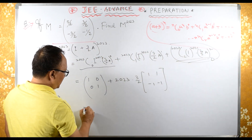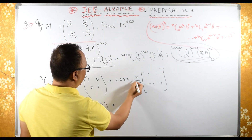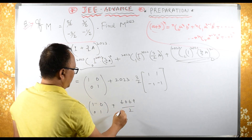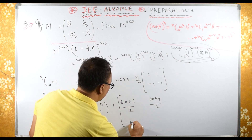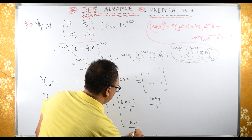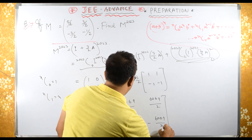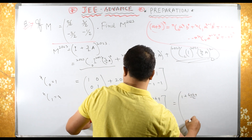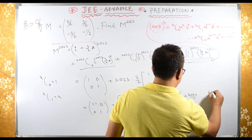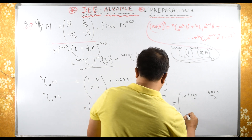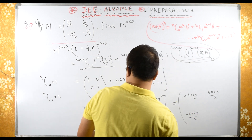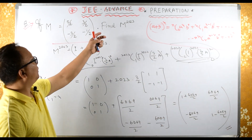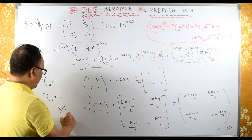So this equals [[1,0],[0,1]] plus here we have 2023·(3/2) times A = [[1,1],[-1,-1]]. Computing: 1 plus 2023·(3/2) in the top-left, 2023·(3/2) top-right, minus 2023·(3/2) bottom-left, 1 minus 2023·(3/2) bottom-right. This is the required answer for M raised to 2023.